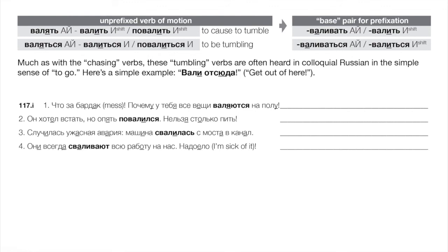Number two: он хотел встать, но повалился снова — he wanted to get up but fell down again; one shouldn't drink that much. Without the particle: to knock something over, make it tumble. With particle: intransitive, spontaneously tumbling over. A terrible accident: машина свалилась с моста в канал — a car tumbled down from the bridge into the canal in a chaotic, disastrous way.